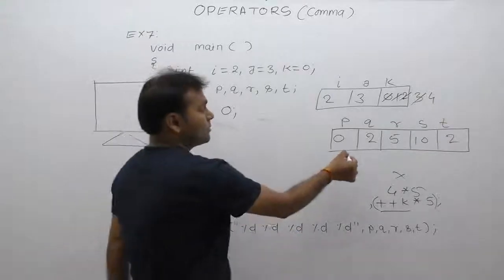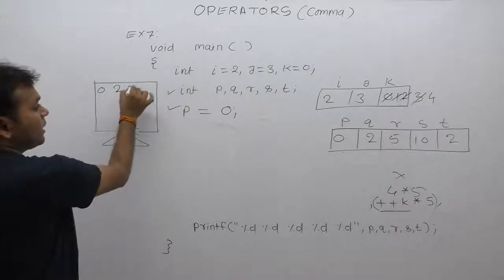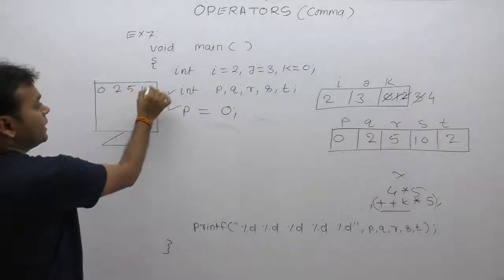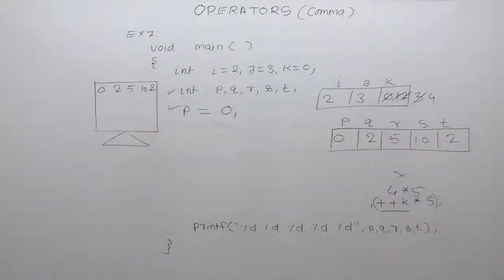Output. p value of r is 5, s is 10, t is 2.